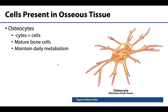Now let's return to the cells of bone tissue. Osteogenic cells develop into osteoblasts, which secrete collagen fibers into the extracellular matrix, eventually surrounding and trapping themselves within it. At that point, when the osteoblast has stopped secreting organic materials, it will become an osteocyte — the mature bone cells, kind of the main cells in the bony tissue.